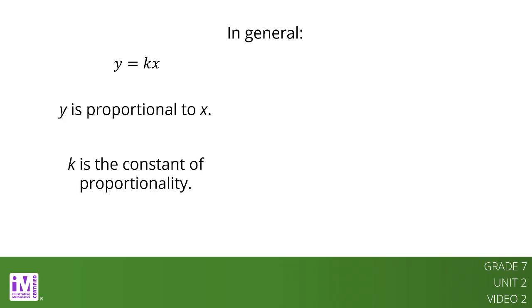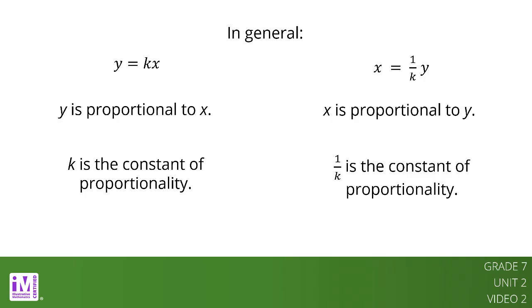In general, when two quantities x and y are in a proportional relationship, we can write the equation y equals kx and say y is proportional to x. In this case, the number k is the constant of proportionality. Each equation can be useful depending on the information we have and the quantity we are trying to figure out. Sometimes writing an equation is the easiest way to solve a problem about a proportional relationship.